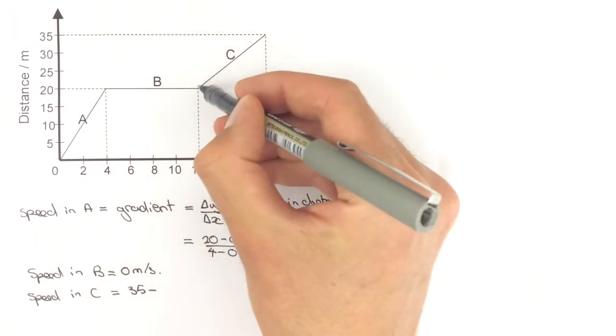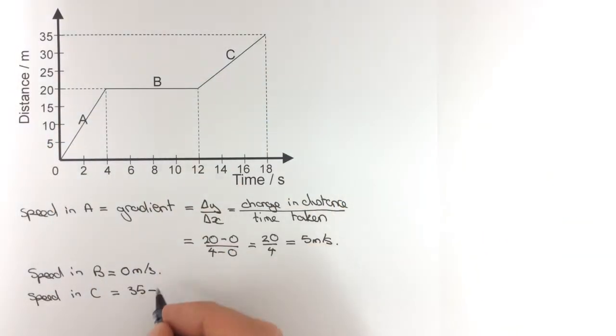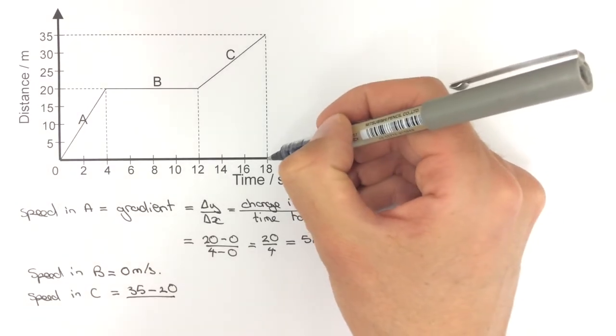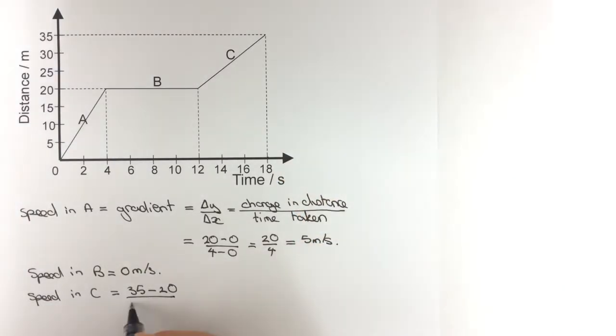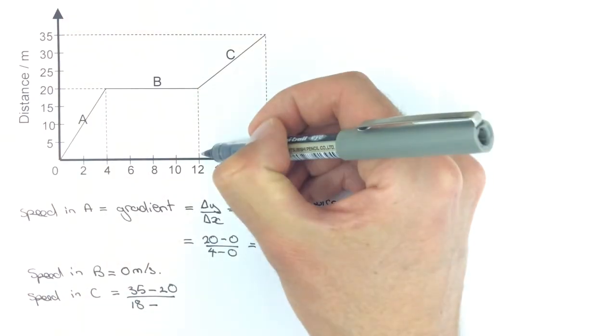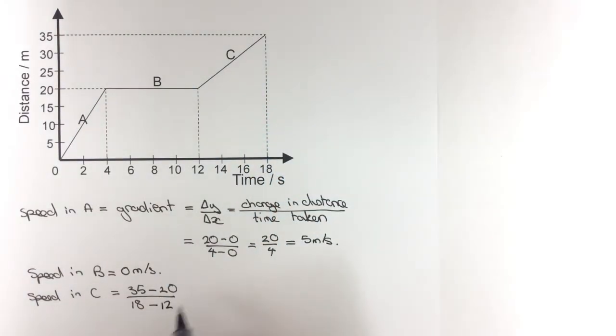and then divide that by the final time, which is 18, minus the time at the start, which is 12. This gives me 15 over 6